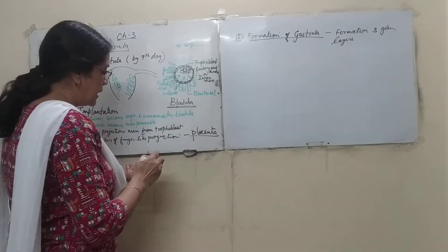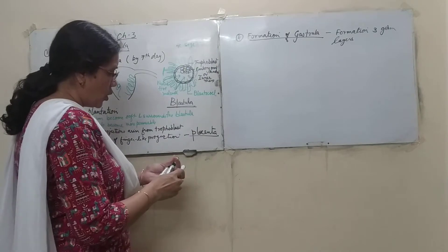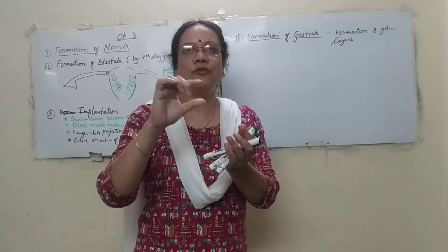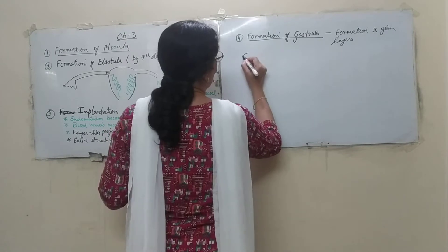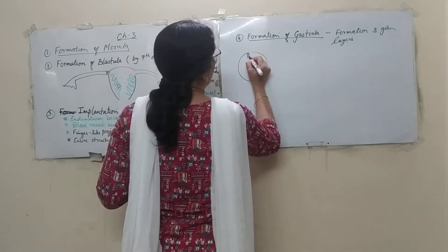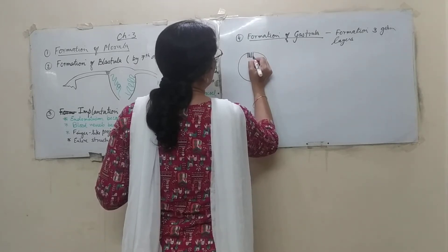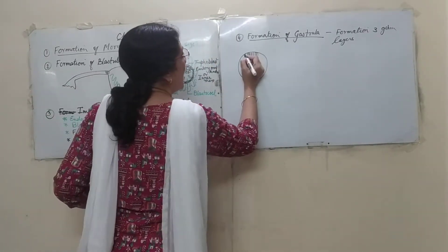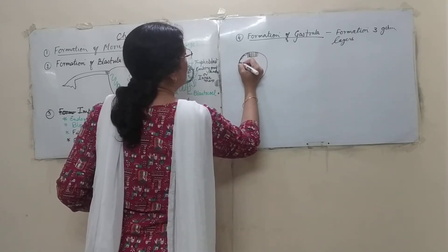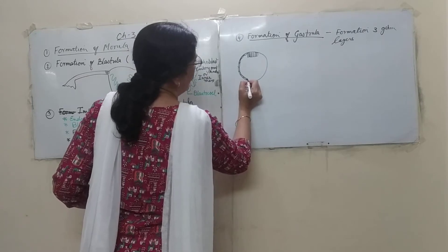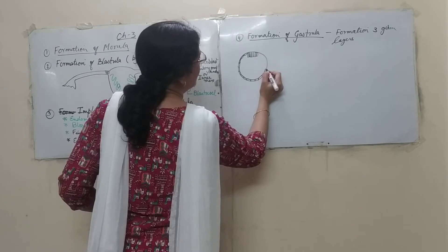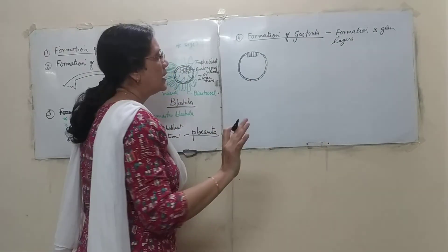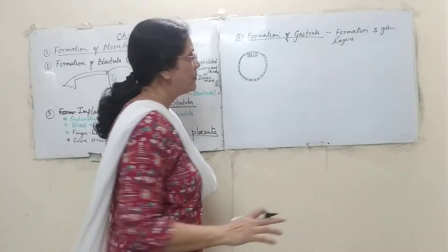The embryonal knob, which is present here, is going to arrange and become a single layer — it will form a disc-like structure. This is the first layer. The embryonal knob, or inner cell mass, arranges in a disc-like layer, and surrounding it we have the trophoblast layer with its flat cells.